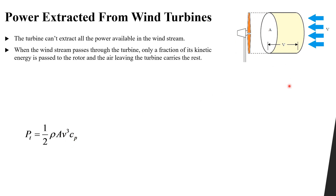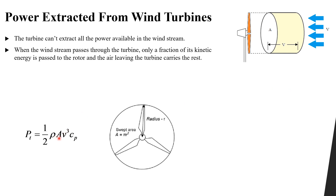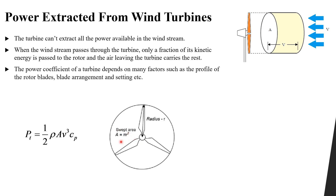The area here is the swept area of the turbine. The larger the area, the more kinetic energy will be extracted from the wind stream. The swept area is pi r squared, or pi over 4 times d squared, where d is the diameter. The power coefficient Cp depends on many factors such as the profile of the rotor blades, blade arrangement and setting, and many other factors. Cp is the ratio between the power of the turbine divided by the power available in wind: one-half rho times A turbine times v cubed.